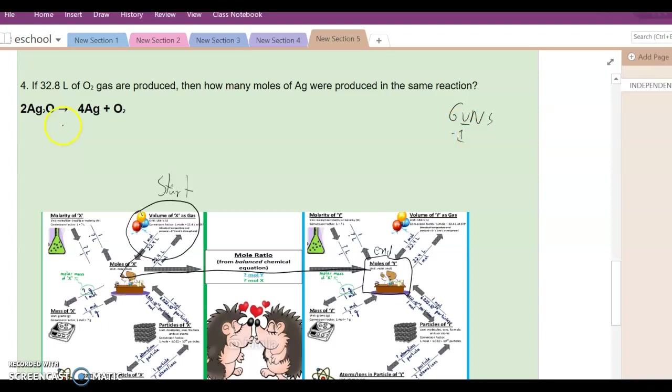Let's get our numbers in and solve. So what I'm given is 32.8 liters of O2, and I'm just going to follow along. I'm going to put a one underneath. Great, now we can get started.